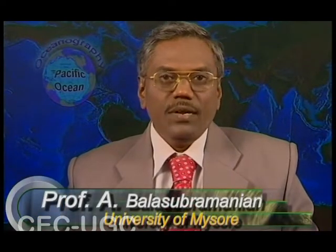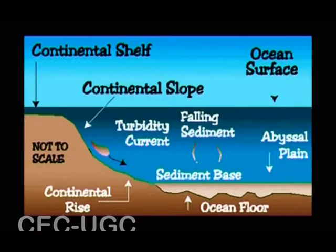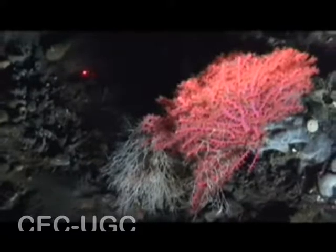The shelves consist of vast deposits of sands, mud, and gravels overlying crystalline rocks or vast thicknesses of consolidated sedimentary rocks. The edge of the shelf, called the shelf break, is marked by an abrupt increase in slope to an average of about 4 degrees. The shelf is followed by the continental slope, which is much steeper and plunges to depths of 3.6 kilometers. The slope forms the sides of the continents, with a width ranging from 20 to 100 kilometers, and in many places deep underwater canyons cut through the slope.